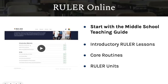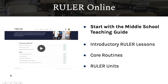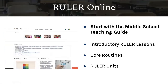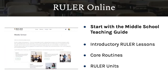Everything you will need to do all of that and more can be found by accessing Ruler Online. Ruler Online is the online platform to which all educators in your school or organization have access. You will find middle school classroom instruction just by logging in to Ruler Online. Once you log in, the materials are available in PDF format under Curricula. Select Middle School and then your grade level.